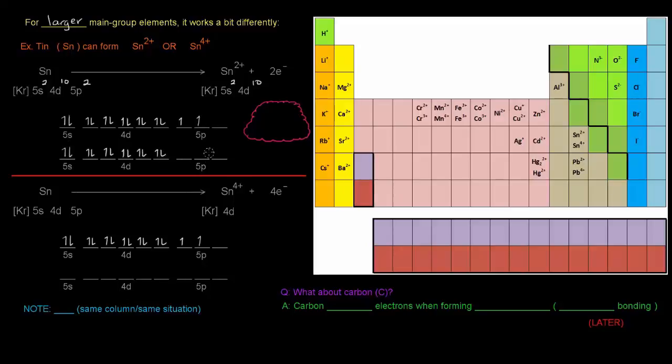It's stable—all these orbitals are completely filled—but the 5p isn't filled, so it's not a noble gas configuration. This is called a pseudo noble gas configuration, which hints that it's stable but not quite noble gas stable.